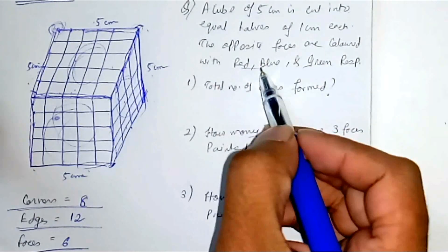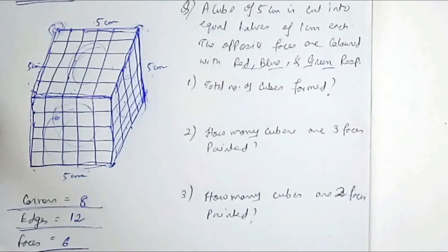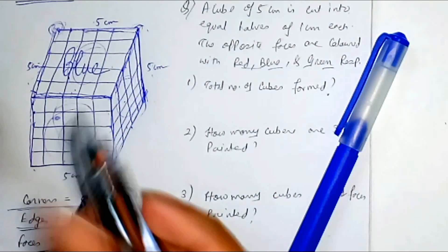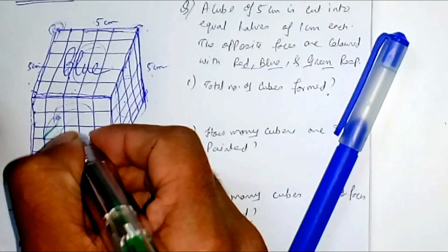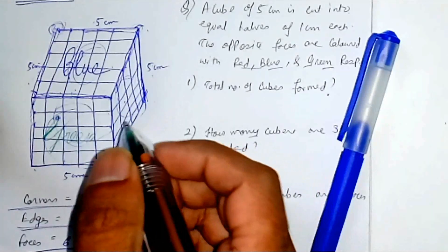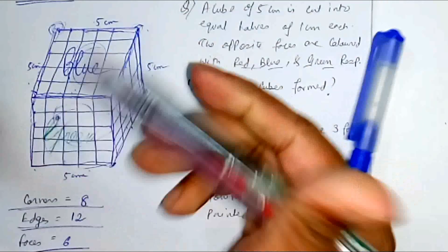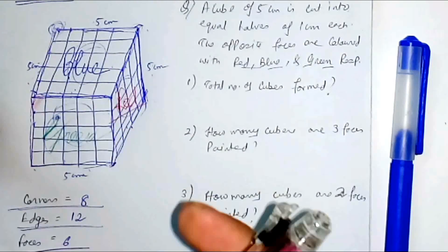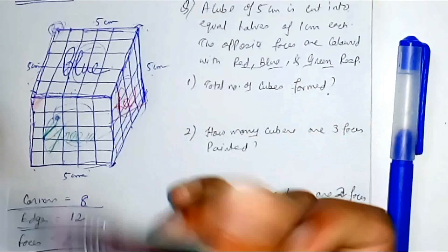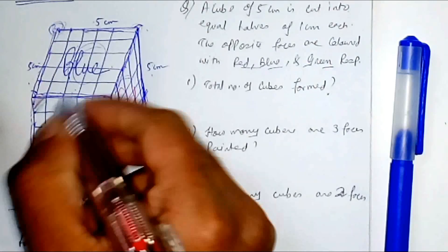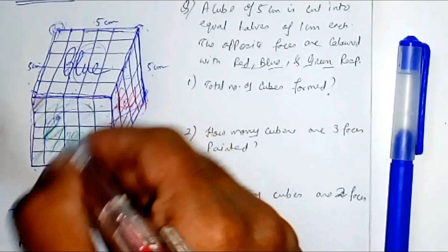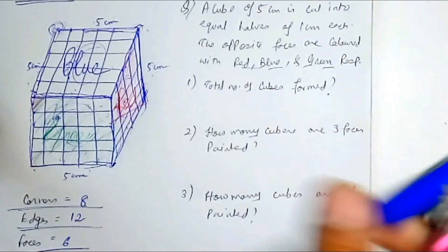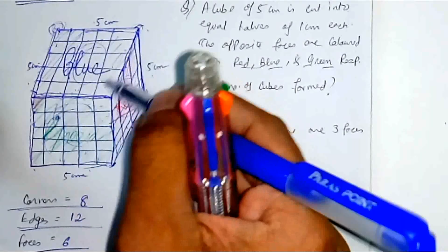Now, the statement says the opposite faces are colored with red, blue, and green respectively. So this face is colored blue, the opposite face is also blue. This face is colored green, the opposite face is also green. And this face is colored red, the opposite face is also red.